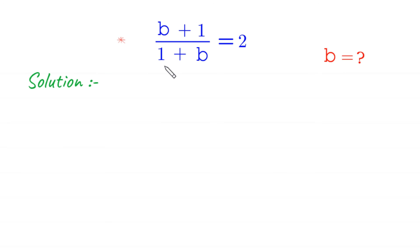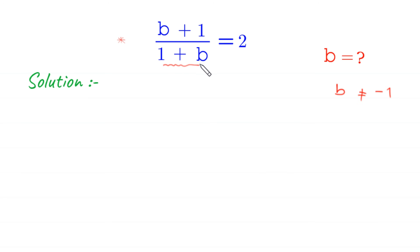Since 1 plus b is in the denominator, b cannot be equal to negative 1. Because if b is negative 1, then 1 minus 1 will become 0, and dividing by 0 is undefined.